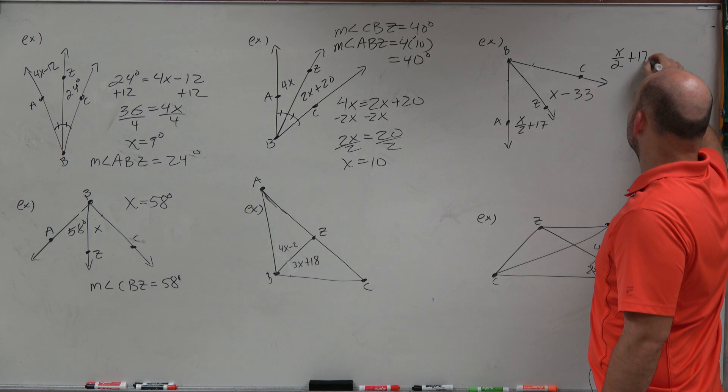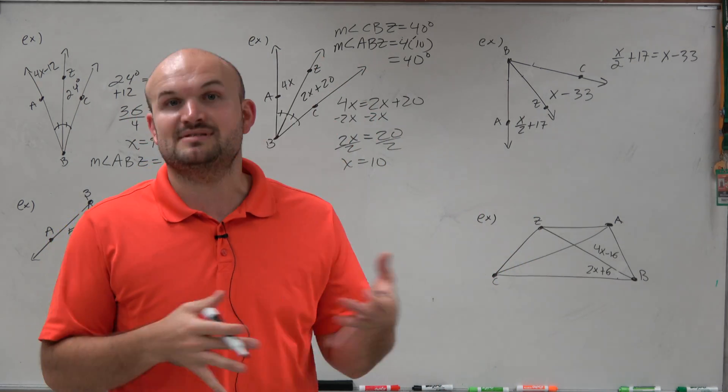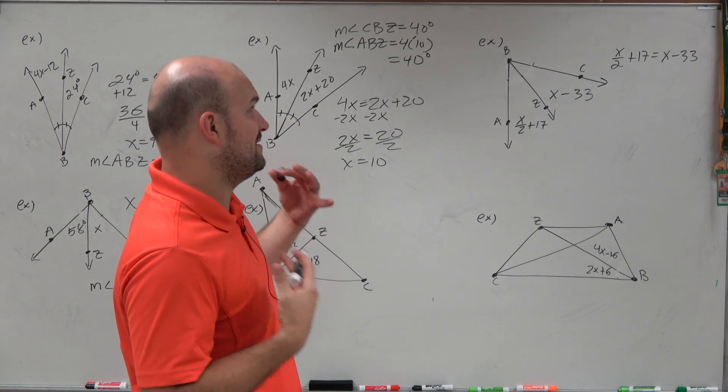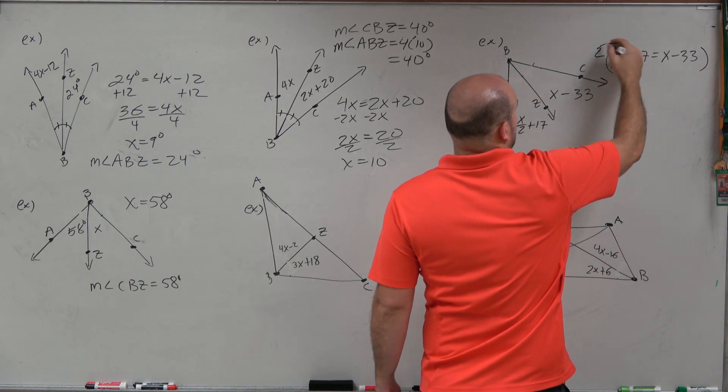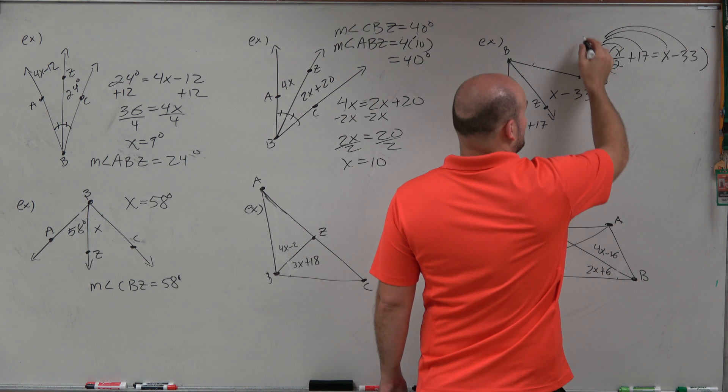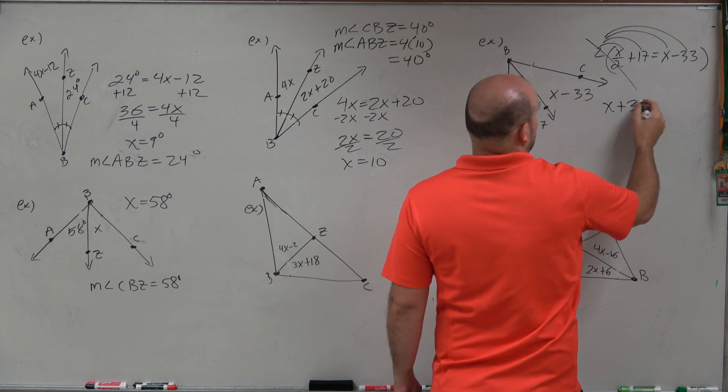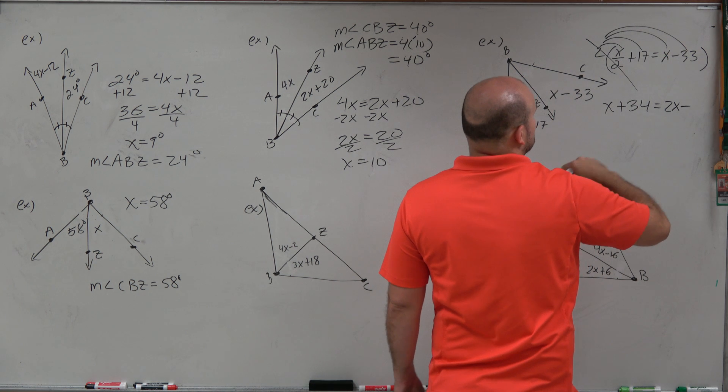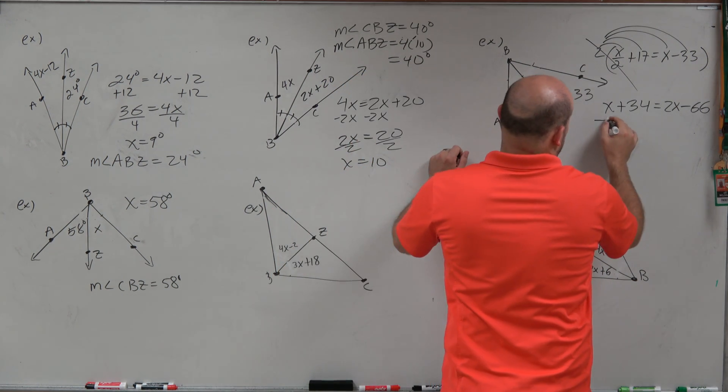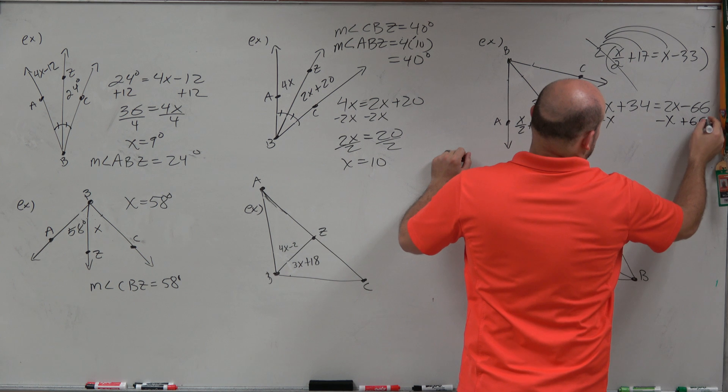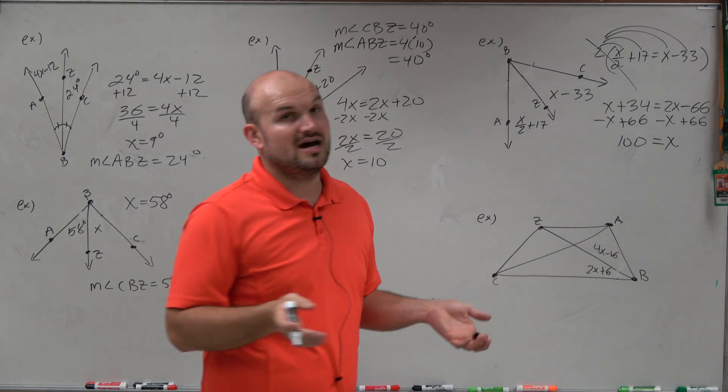So I'd have x over 2 plus 17 is equal to x minus 33. Now, again, my main thing that I like to do is try to get the variables on the same side. I like to get the variables on the same side. But I want to get rid of this fraction. So one way to get rid of the fraction is just to multiply everything by 2. Everything by 2. So by multiplying everything by 2, that 2 in the denominator divides out. So therefore, I'm left with x plus 2 times 17 is 34, equals 2x minus 2 times 33, which is negative 66. Now, I can go ahead and get my variables to the same side. I'm going to get my variables to the right side, so I don't have to deal with negatives. So that means I'm going to add a 66, add a 66. So that's 100 equals x.